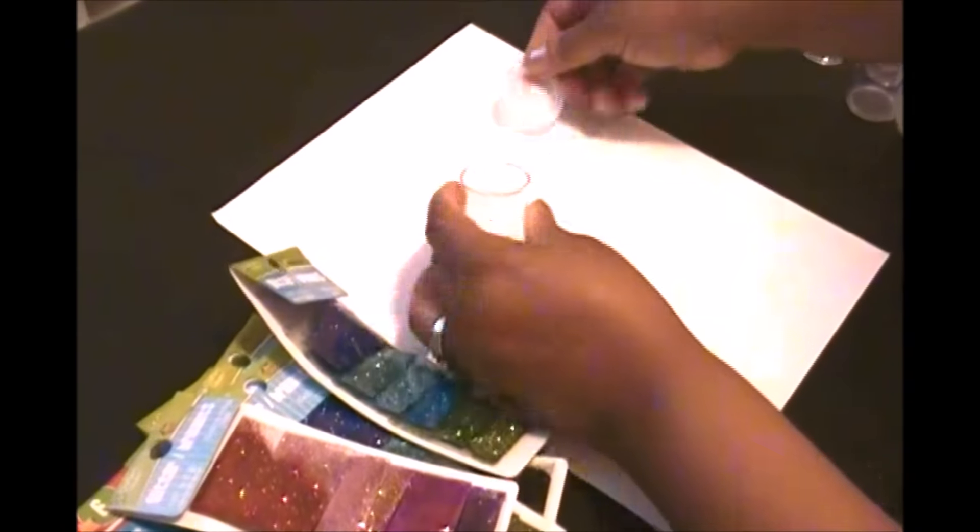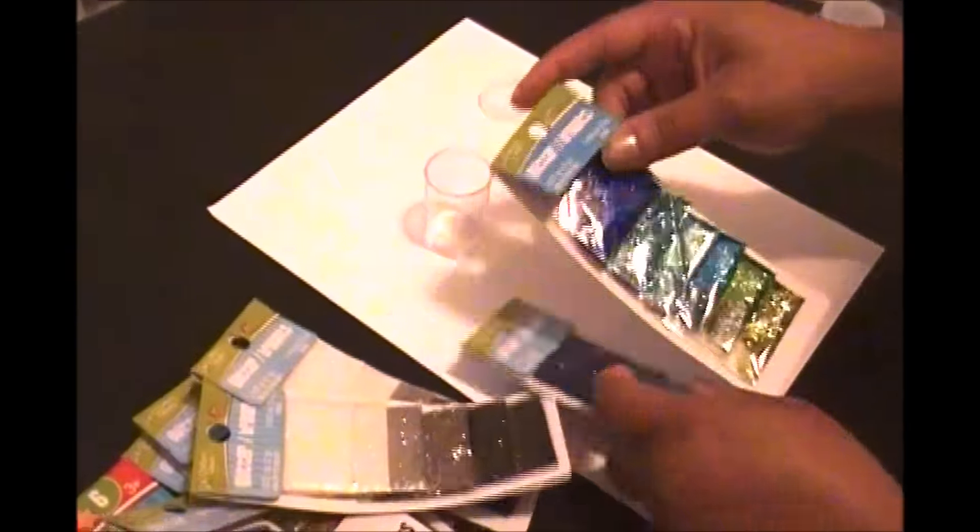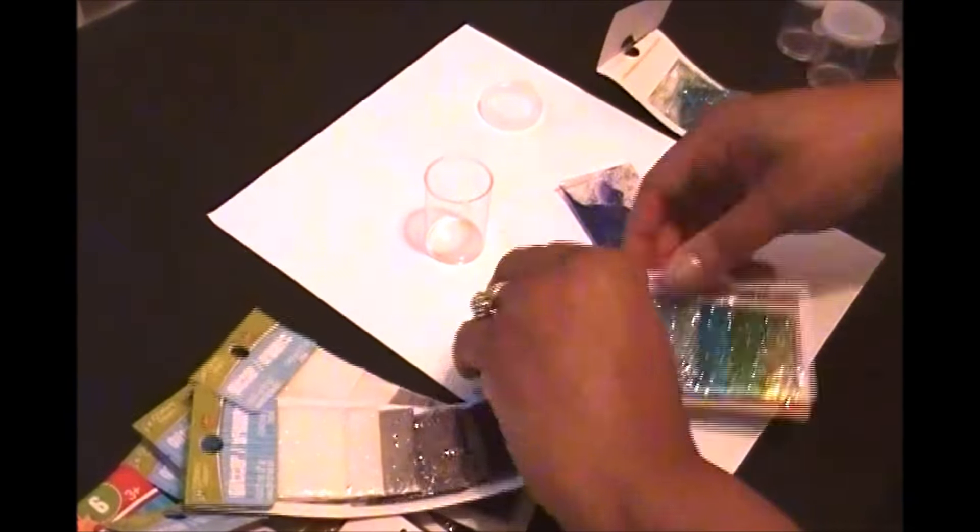Now I'm just going to uncap these. It's very simple. You want to work on top of a sheet of paper or something to catch that excess glitter. Then you're going to take your first color and just peel it away from the package.